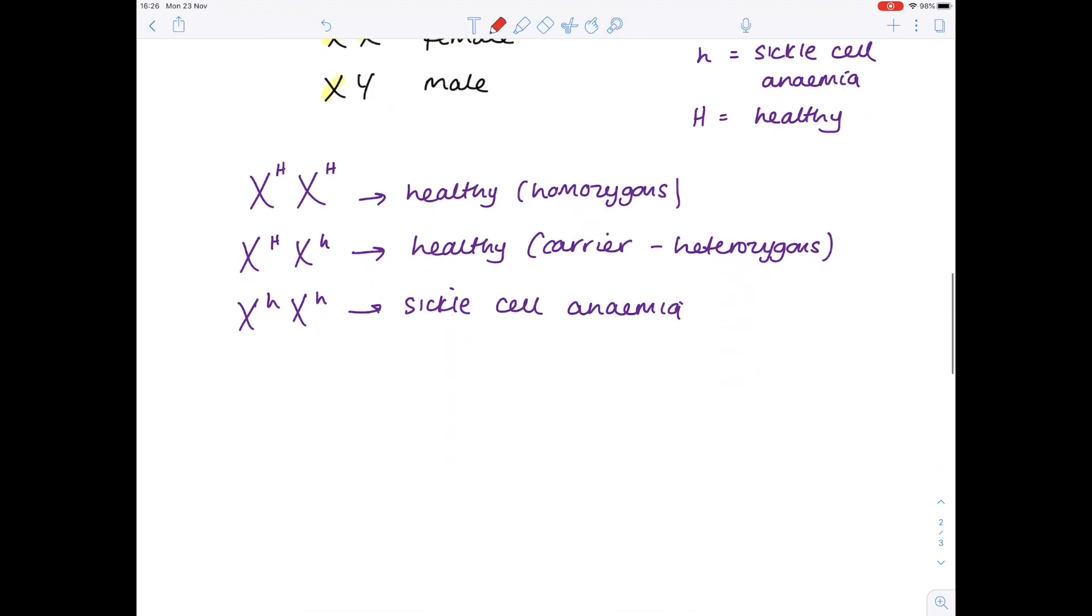If we now look at the potential male combinations of alleles, as we've already said, males contain the sex chromosomes XY. So what about if we were to do an uppercase H? I don't write anything here because remember, I've already said that only the X chromosome carries the genes for anemia. So this person will be male and they will be healthy. The only other combination is this setup, which again is a male, but unfortunately they have sickle cell anemia.